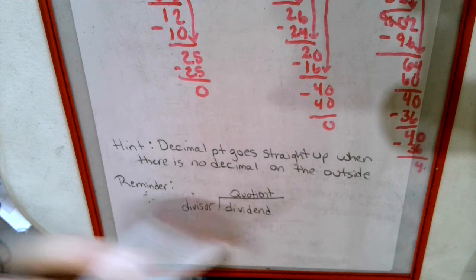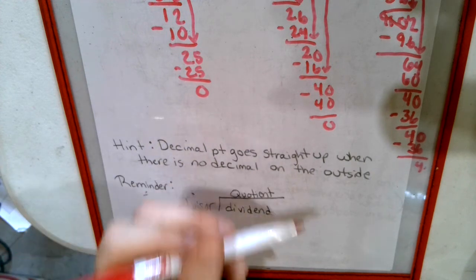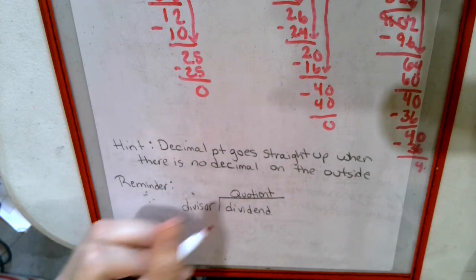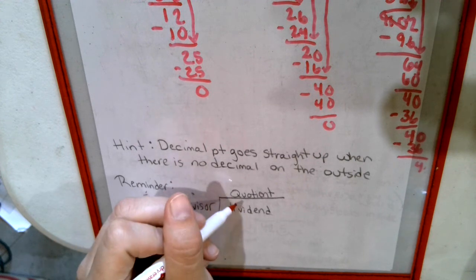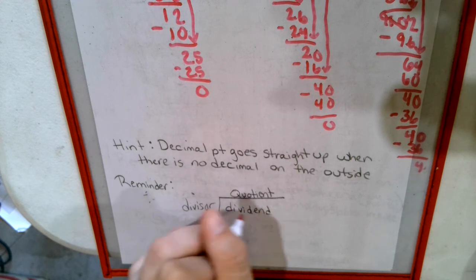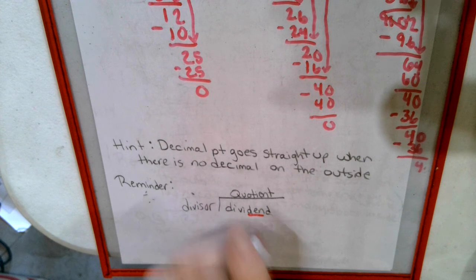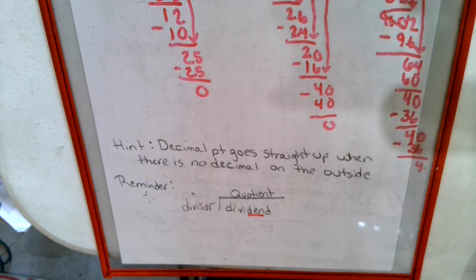Decimal point goes straight up when there is no decimal on the outside. And remember, the outside number is called the divisor. The dividend is in, like a den, dividend, den inside.